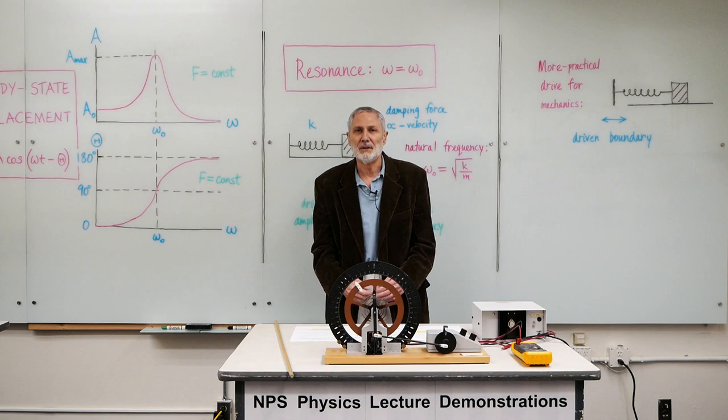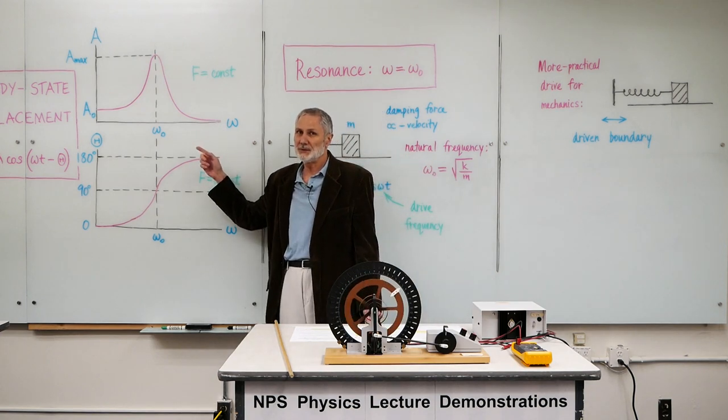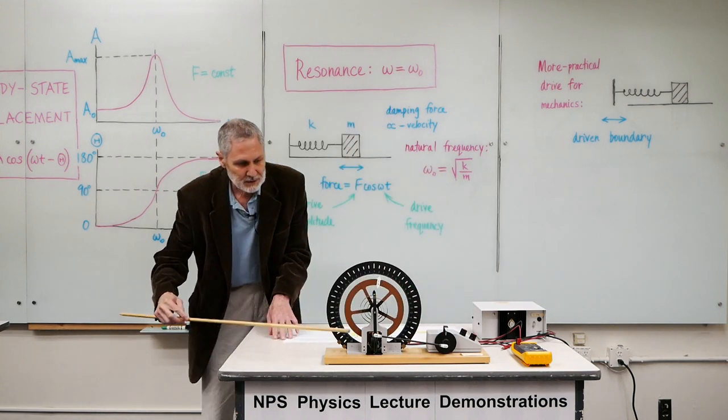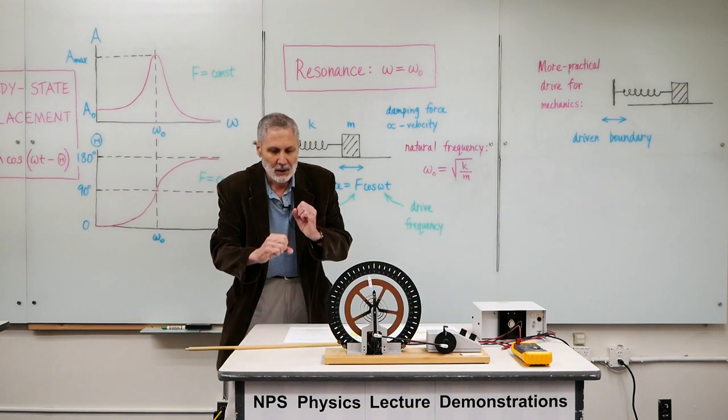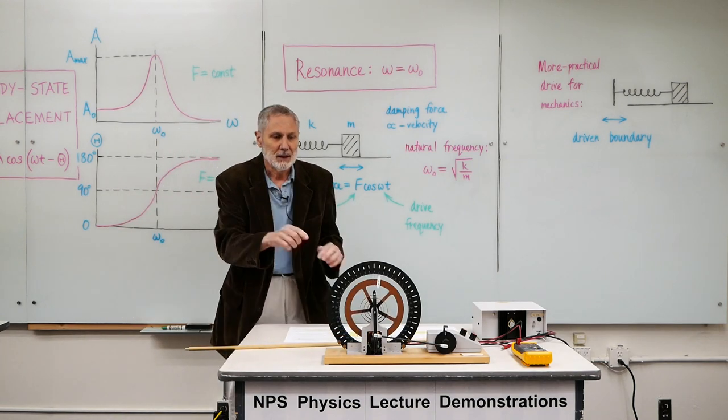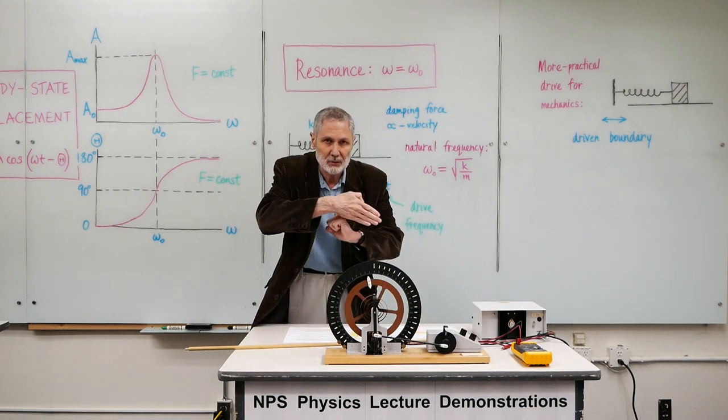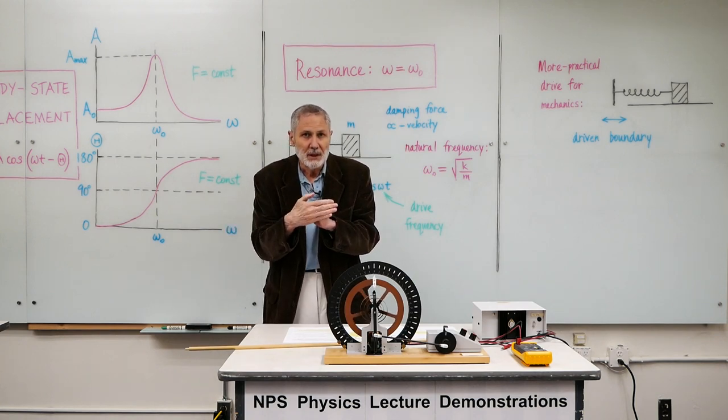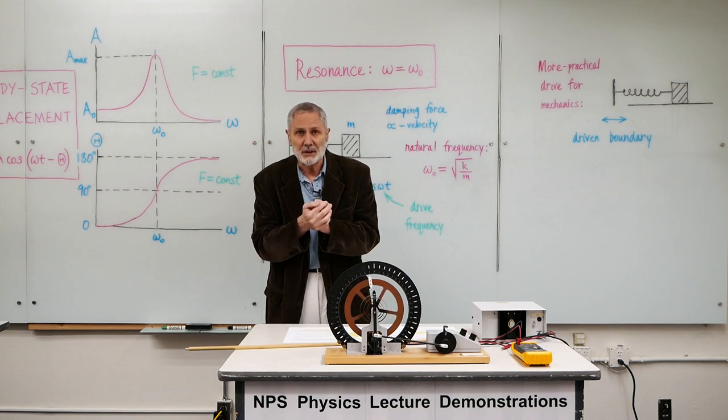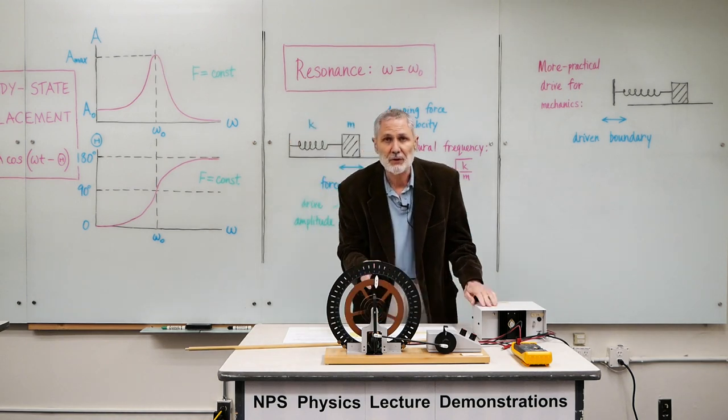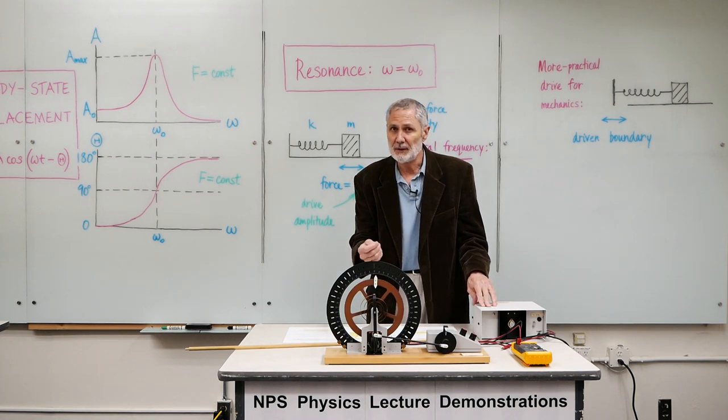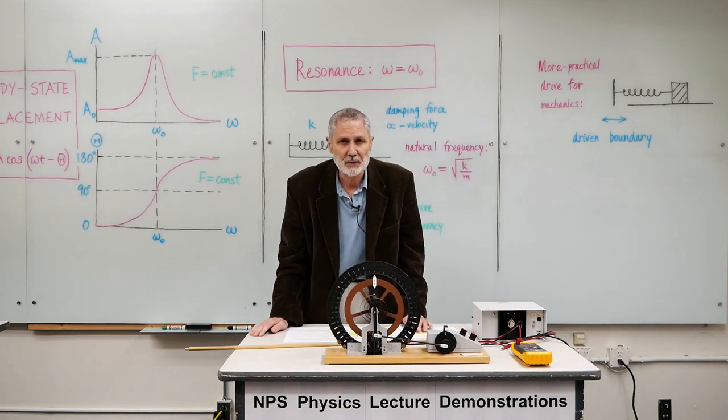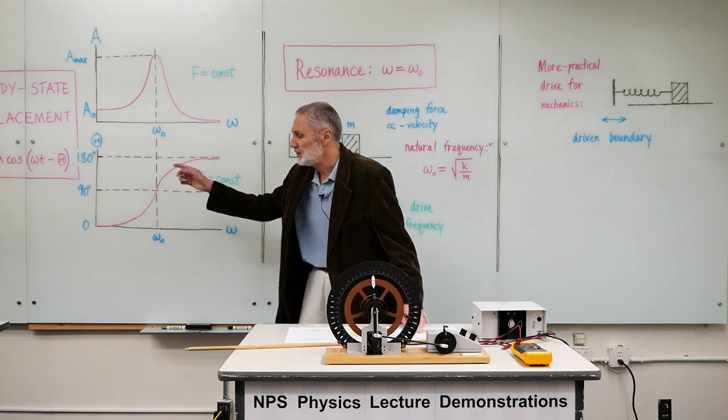The weaker the damping, the longer you have to wait to get to the steady state motion. So the manufacturers of this have taken this into account. Behind the support is an electromagnet, and this metal wheel passes between the poles of the electromagnet. When you have a conductor moving in a magnetic field, there is a damping effect. It's called magnetic braking. So we can control that. The more current we put in the electromagnet, the greater the magnetic field, the greater the magnetic braking.